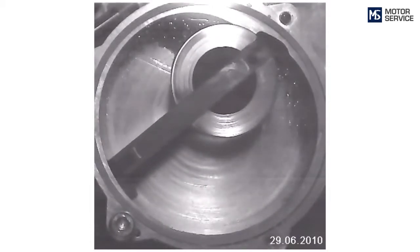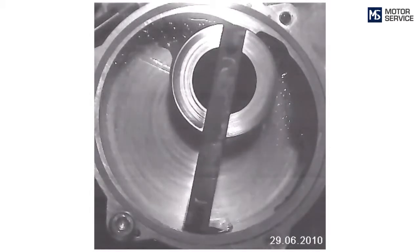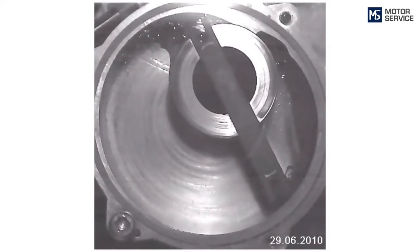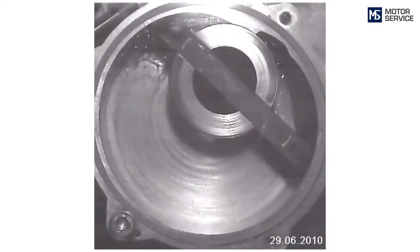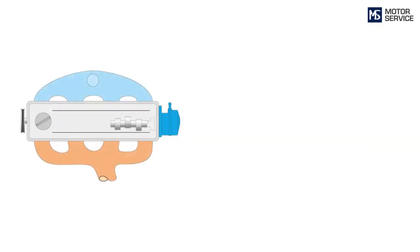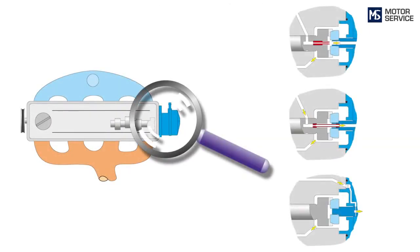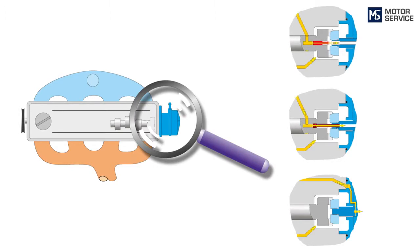Vacuum pumps require lubricating oil for internal sealing, for dissipating heat and for lubrication. Oil is frequently supplied through ducts in the cylinder head or the camshaft. The oil is fed back into the engine along with the exhaust air.